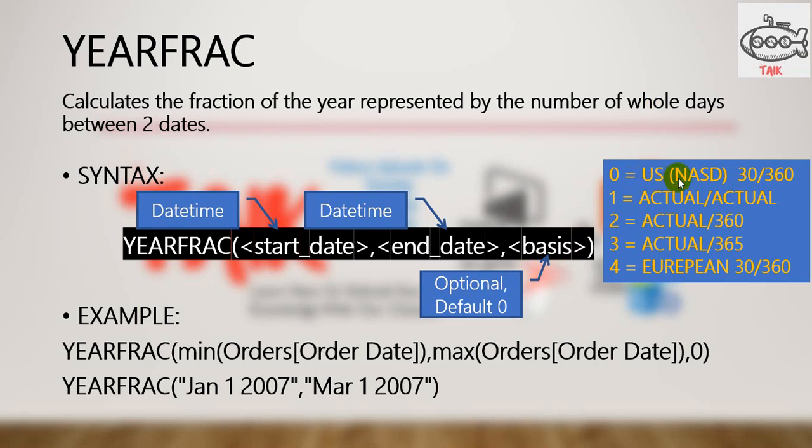Basis has five types. Zero means US NASD — it will divide every month by 30, so 360 days in a year. If you select one, it will calculate actual/actual, meaning the actual number of days in the current month between these dates and the actual number of days in a particular year.